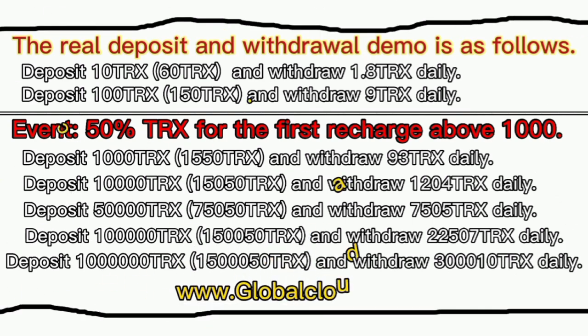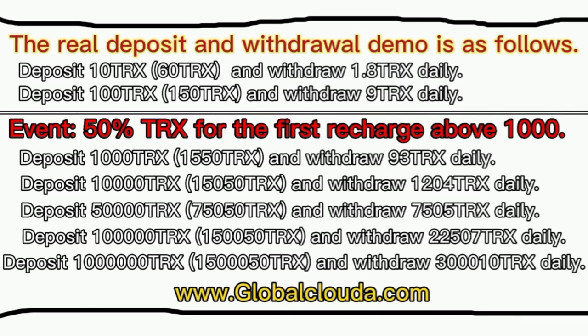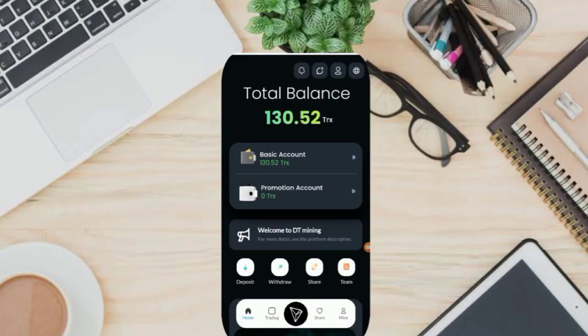Deposit 1,000 TRX, get 1,550 TRX, and withdraw 93 TRX daily. Deposit 10,000 TRX, get 15,050 TRX, and withdraw 1,204 TRX daily. Deposit 50,000 TRX, get 75,050 TRX, and withdraw 7,505 TRX daily. Deposit 100,000 TRX, get 150,050 TRX, and withdraw 22,507 TRX daily. And deposit 1,000,000 TRX, get 1,500,050 TRX, and withdraw 3,010 TRX daily.